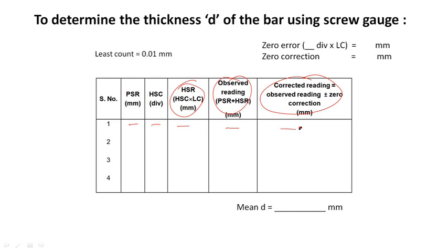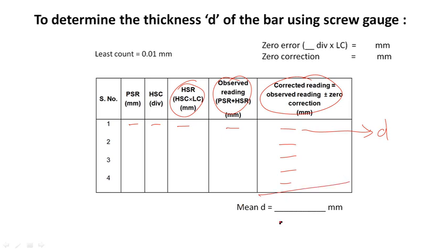After making the zero error correction by adding or subtracting the zero error, you will get the value which represents the d value, which is the thickness of the bar determined by the screw gauge experiment. You can take many such values at different positions of the screw gauge held at the bar and find the mean d value, which is the mean thickness of the bar.